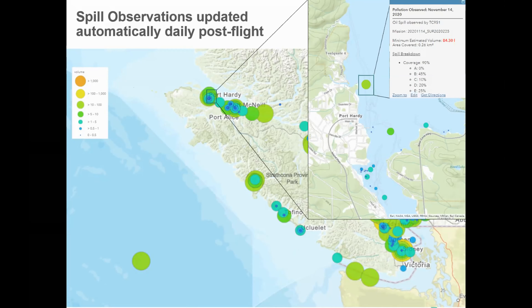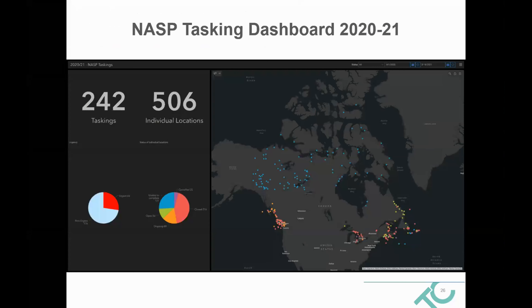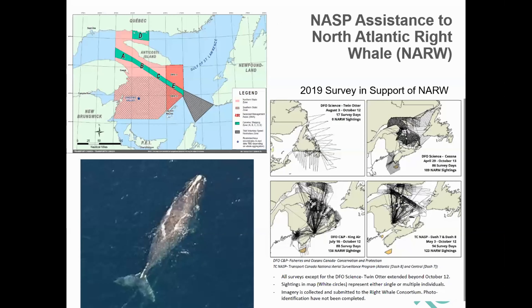These maps would have previously taken until the end of the fiscal year to produce. In addition, eGIS allows us to create dashboards where we can monitor the annual spill casting — providing not only the spatial representation of where they are, but also graphs and pie charts, total counts, and allowing surveillance officers and managers to have a common and current operational picture. These dashboards are also used for high-profile missions, particularly for the North Atlantic right whale mission.